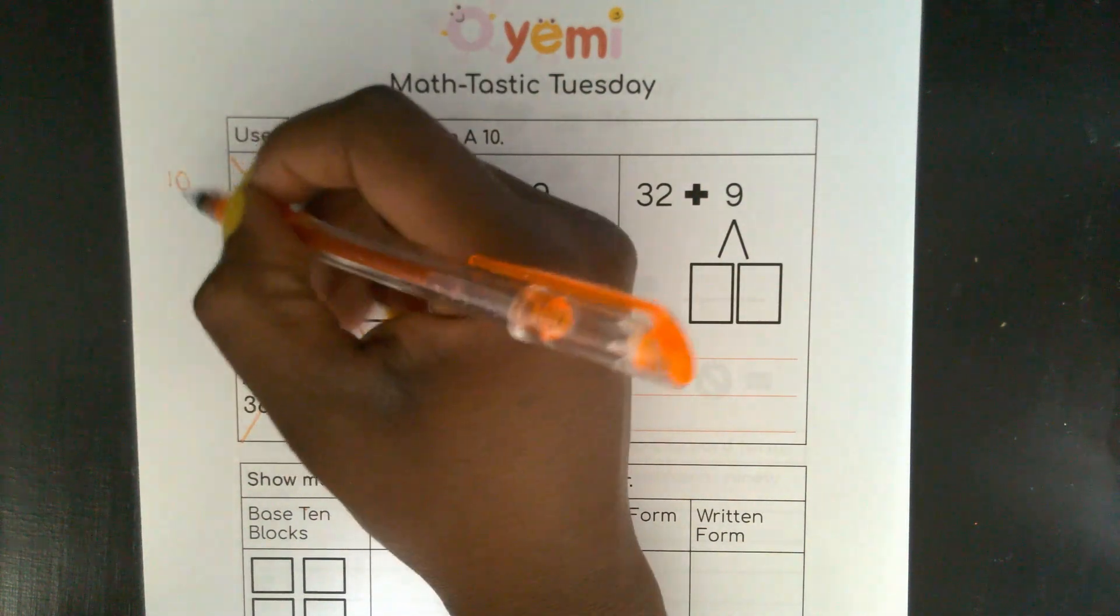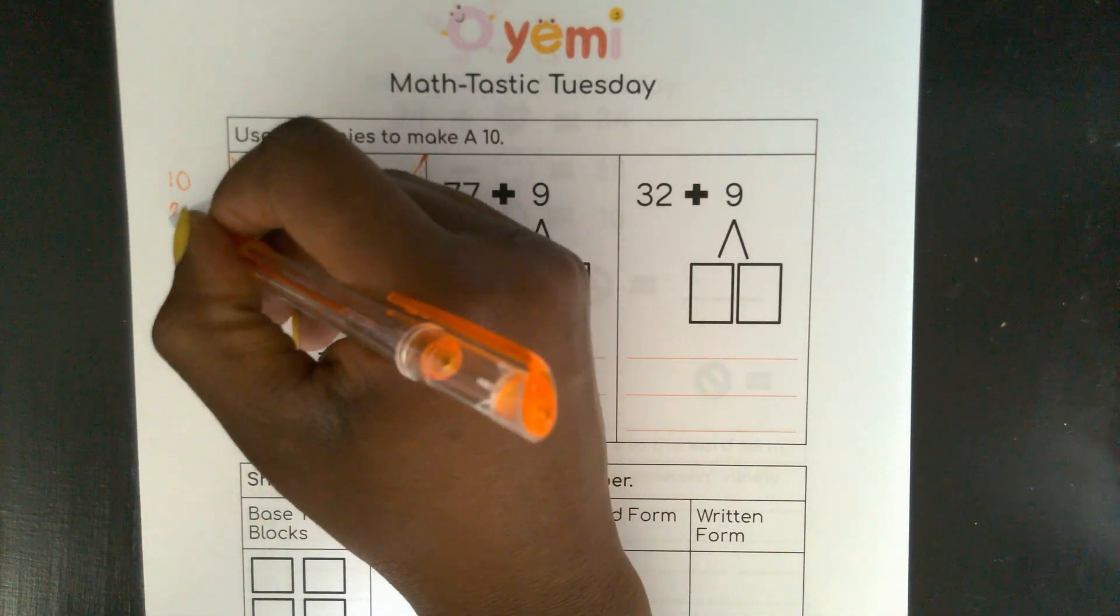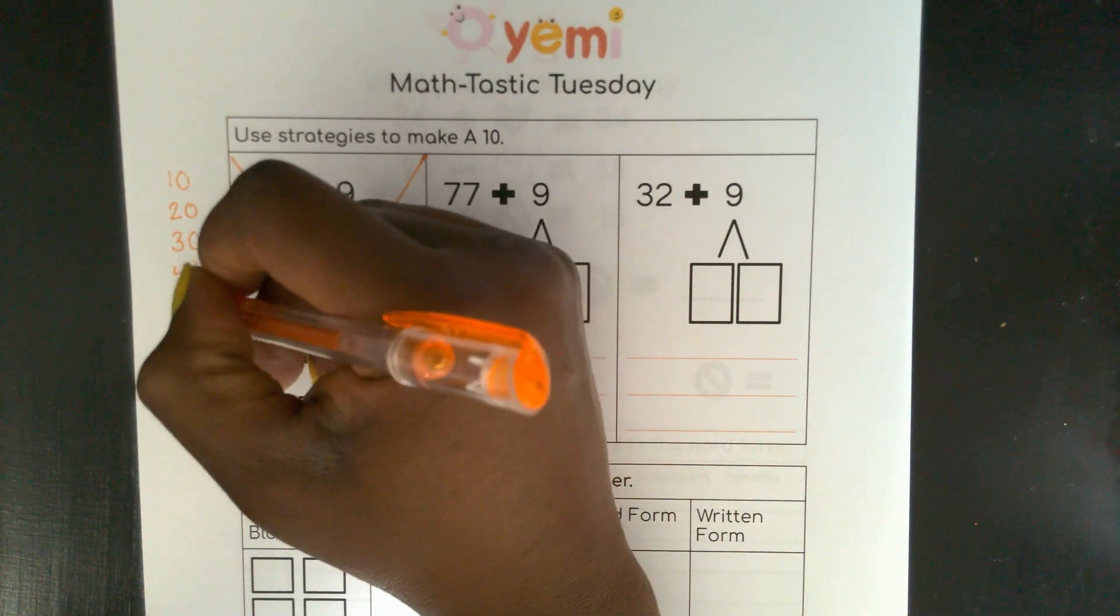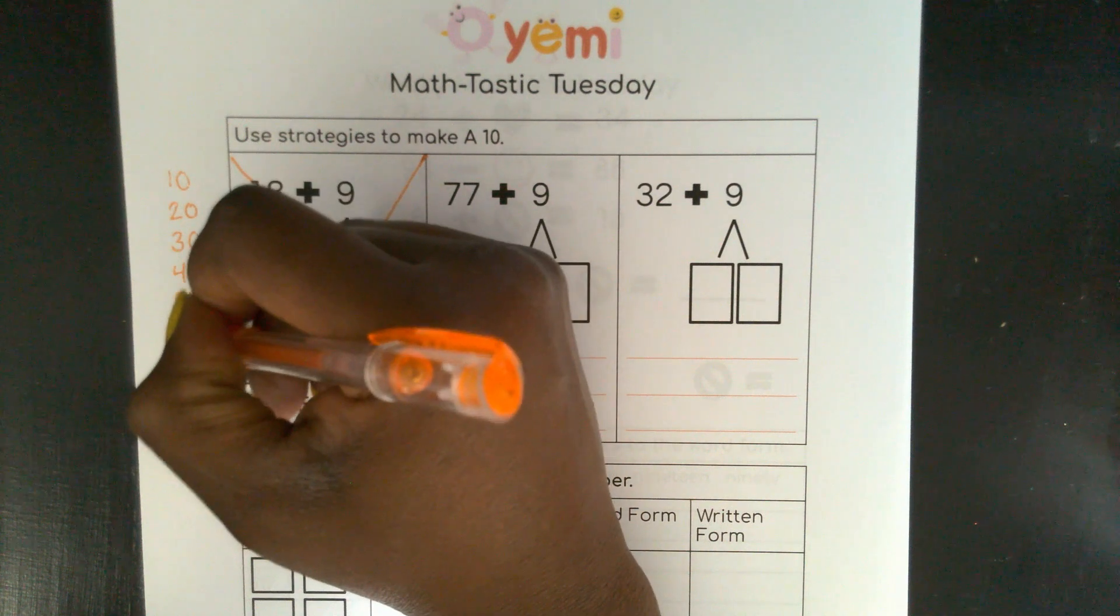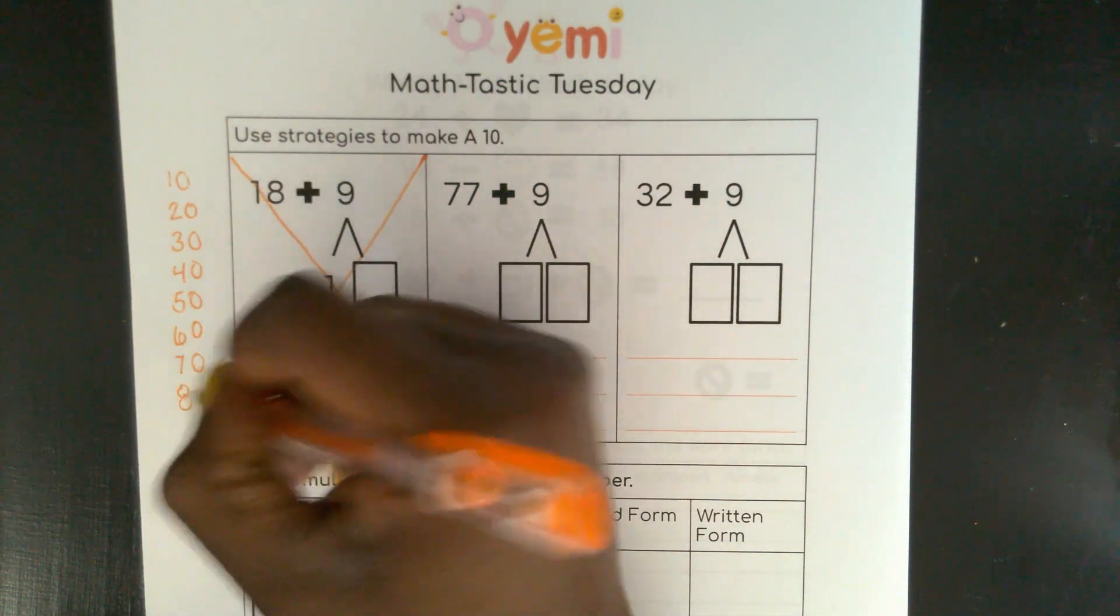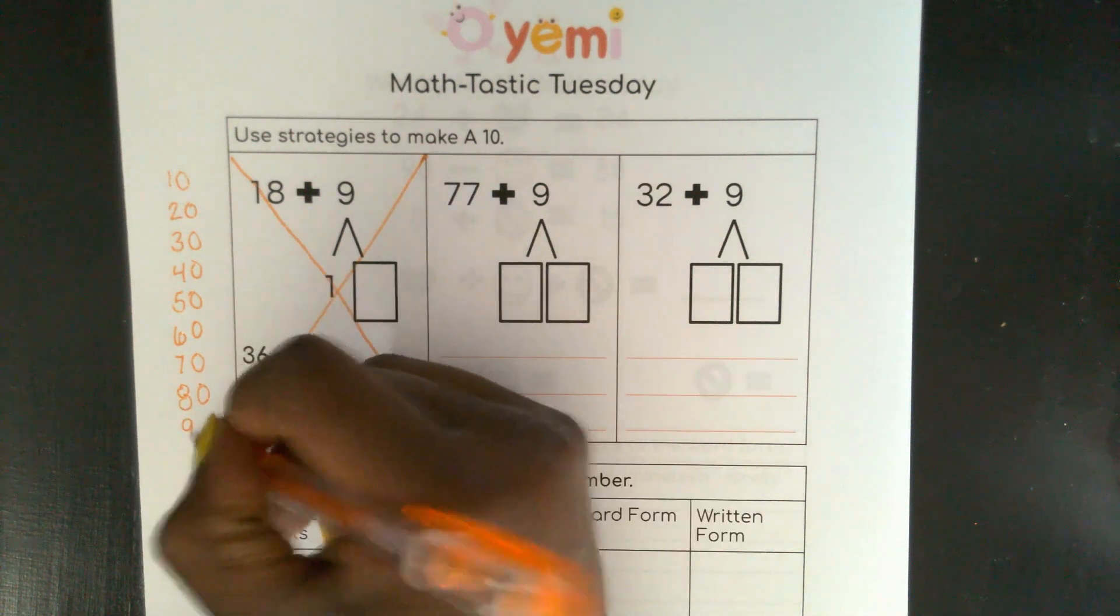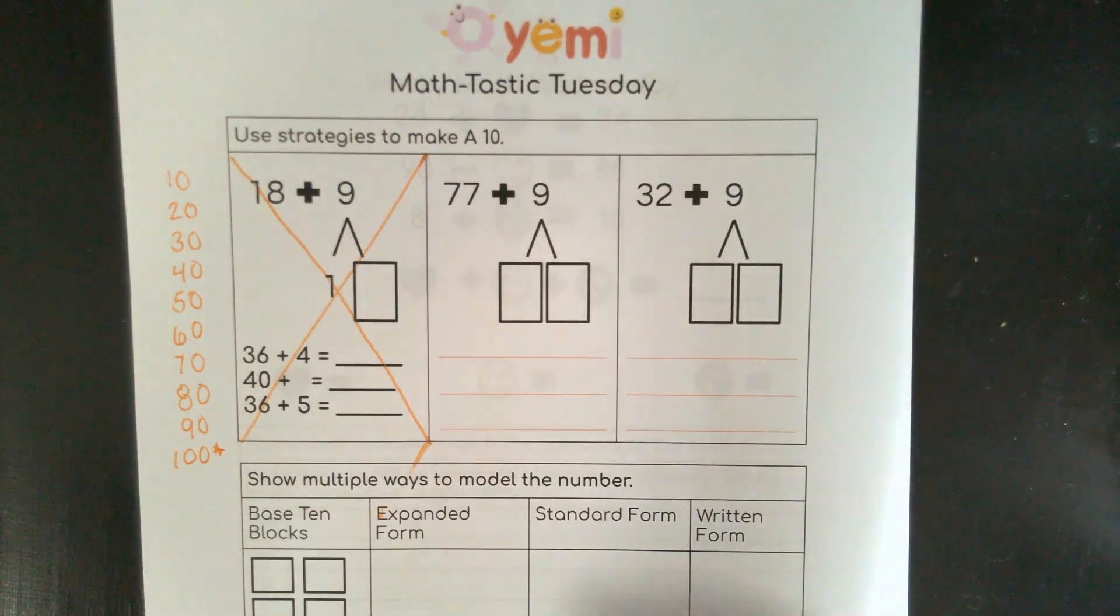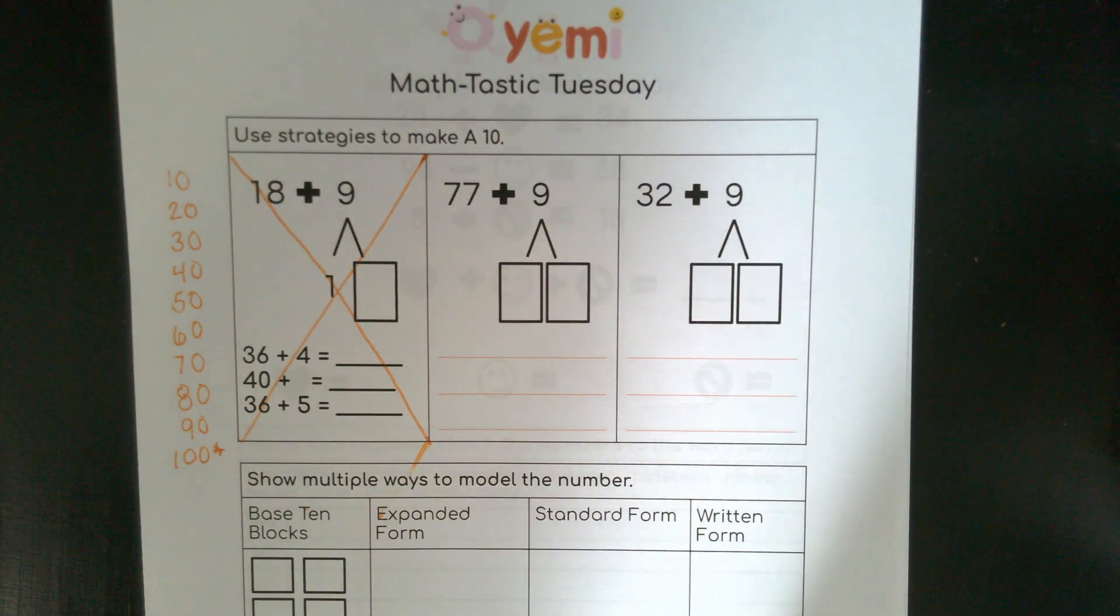10, 20, 30, 40, 50, 60, 70, 80, 90. And remember, 100 is a special 10 that is actually 100, but it's a group of 10 tens that make 100.